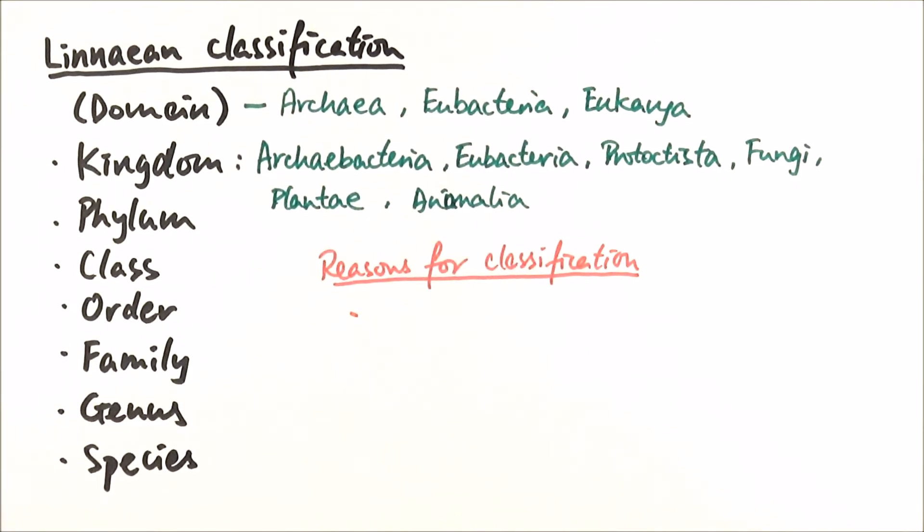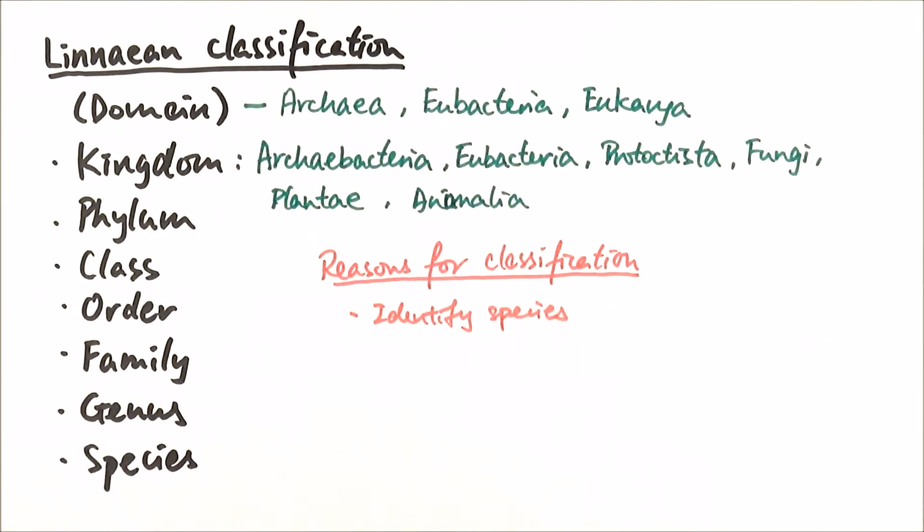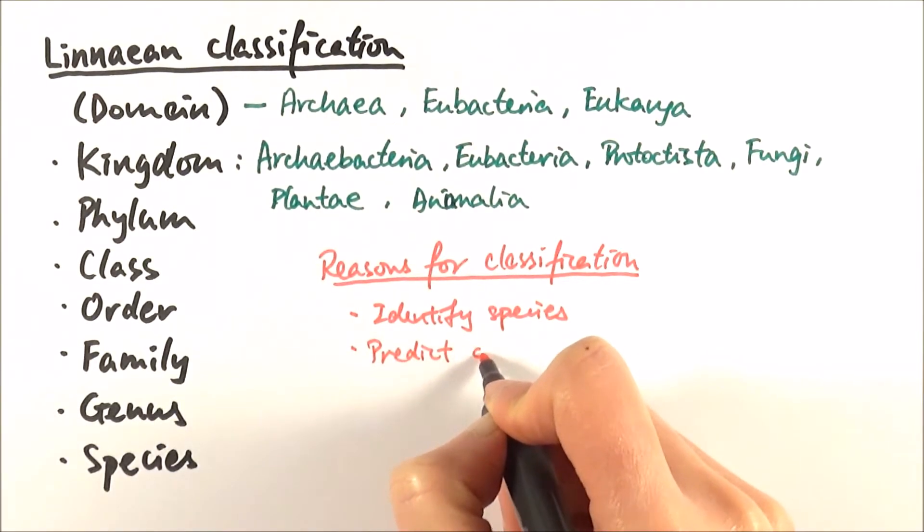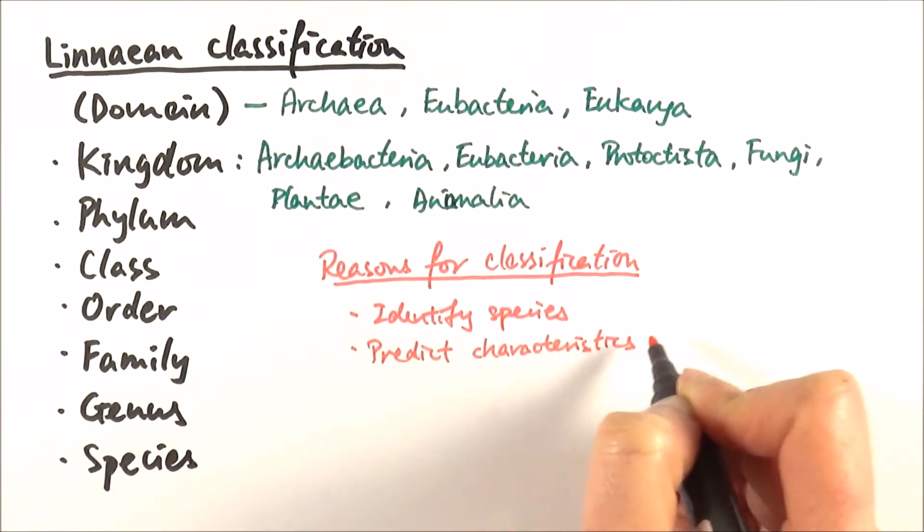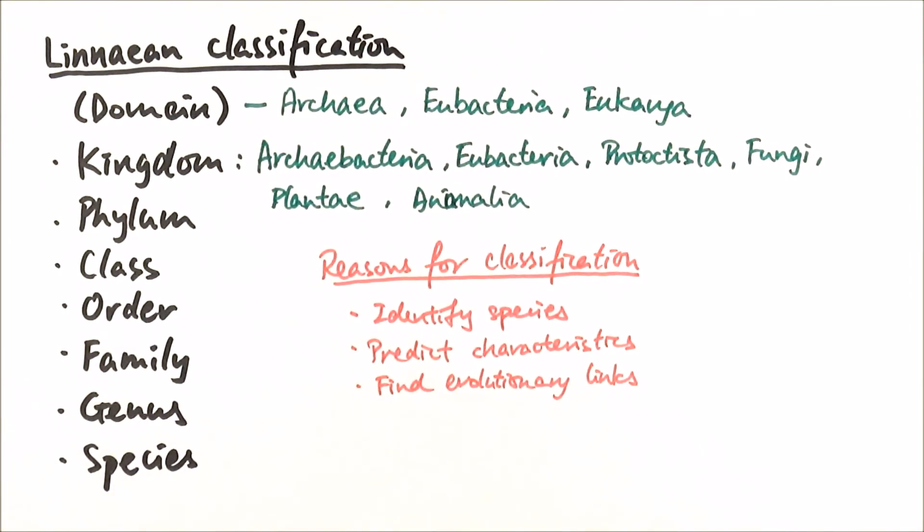Then we'll quickly look at the reasons for classifying organisms. One of the reasons is that we can use this classification system to identify species easily. We can look at some of the characteristics that they share and then think okay which bit do they go into. In the same principle we can also predict characteristics that certain organisms may have. And finally we can use these classifications to find evolutionary links. For example, we can look at two different organisms and if they belong to the same genus, we can perhaps find out how closely related they might be.